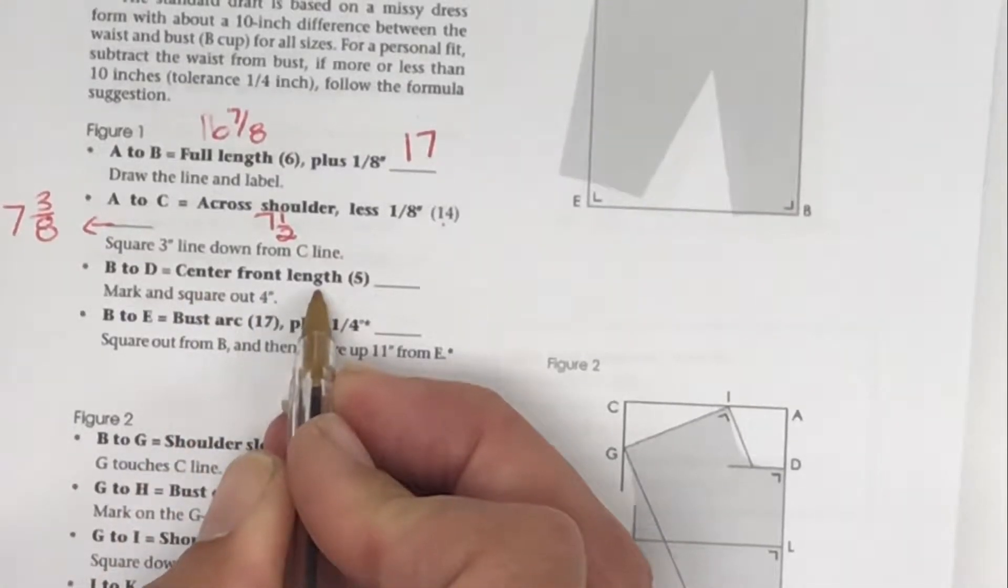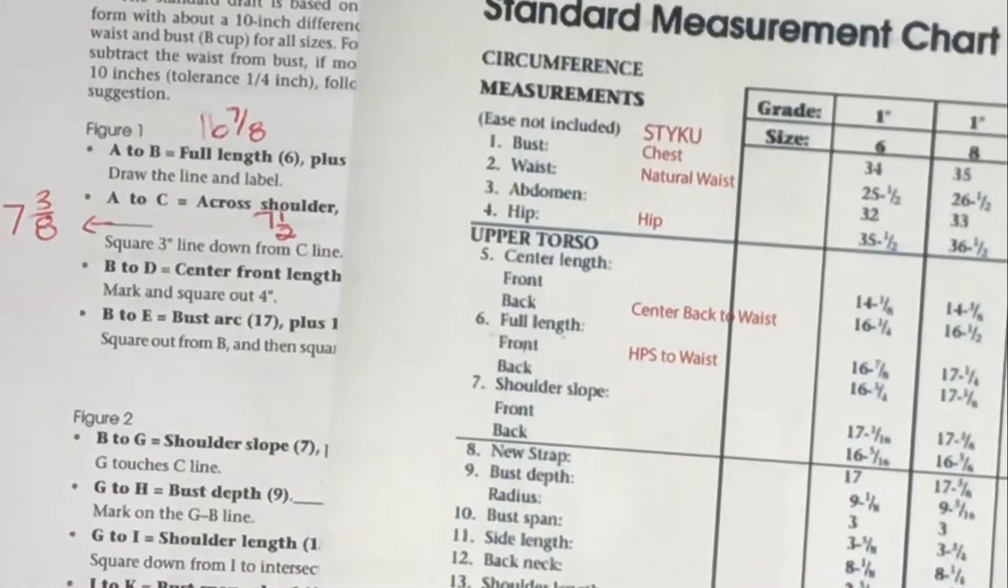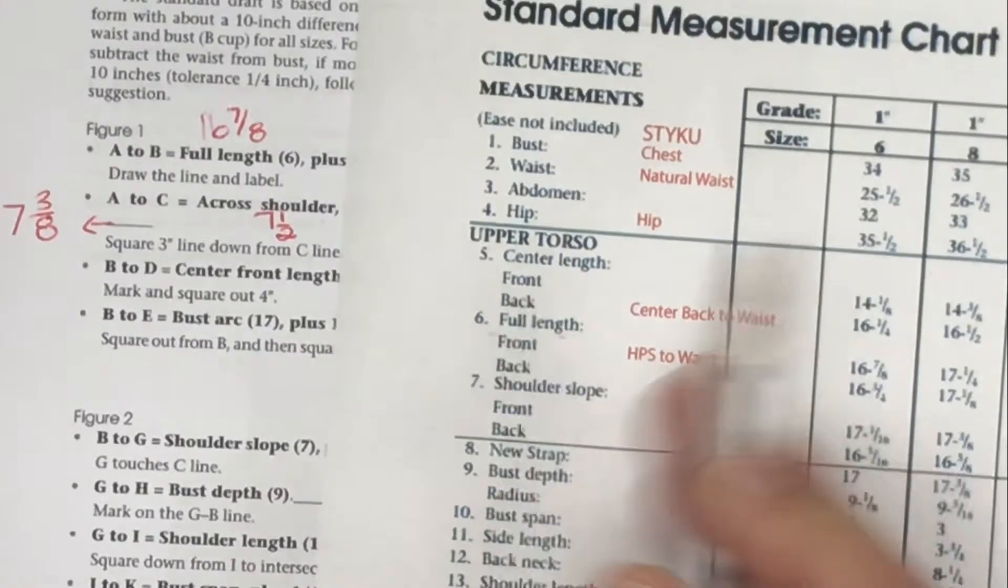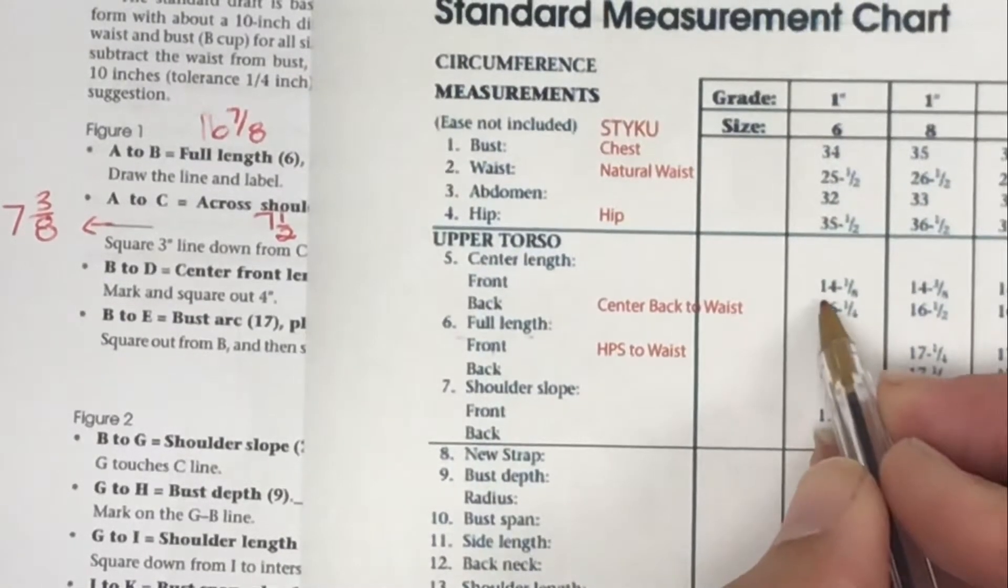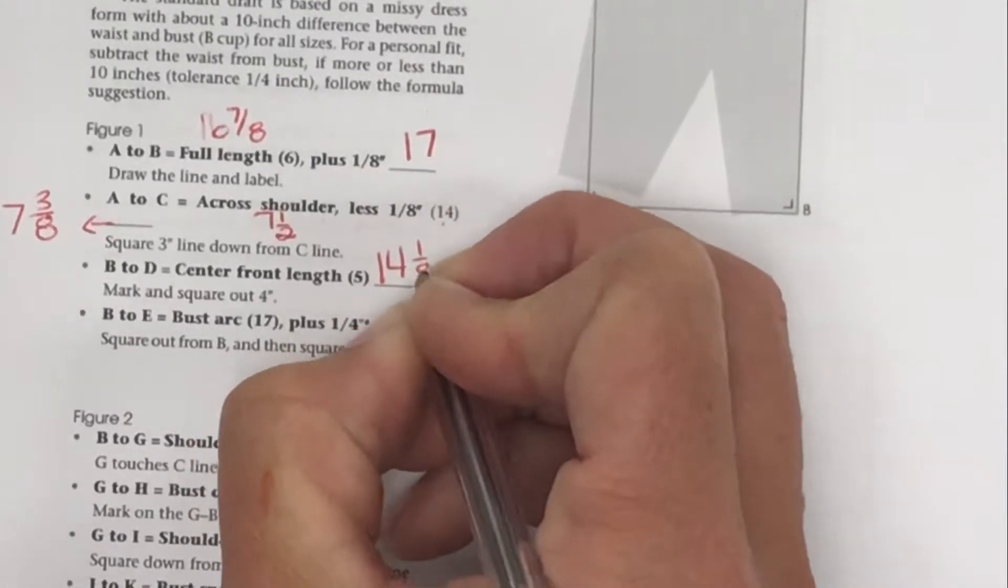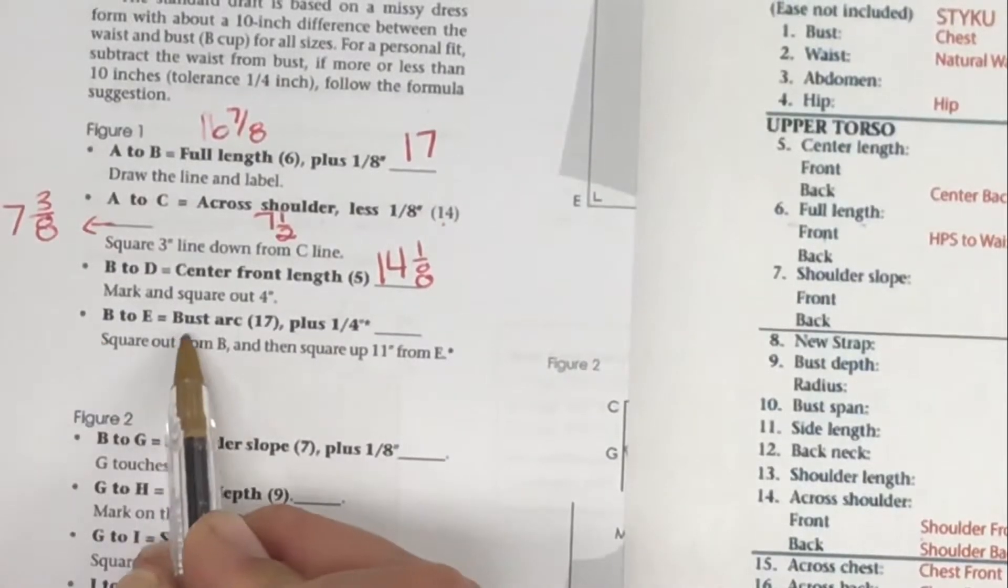The next one is our center front length. We don't have to do any math, it's just number 5. Number 5, center length front for size 6, is 14 and 1/8.